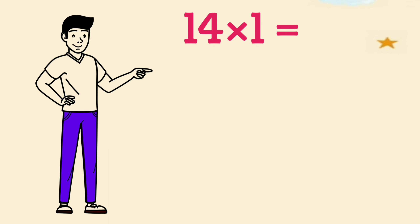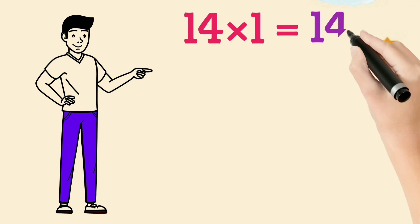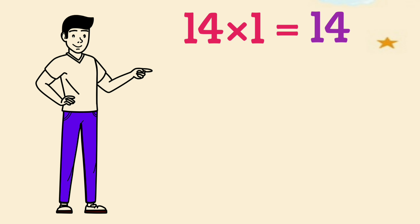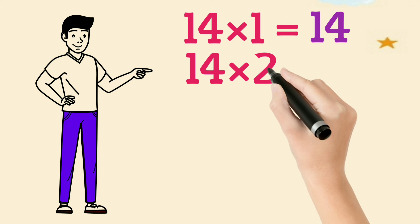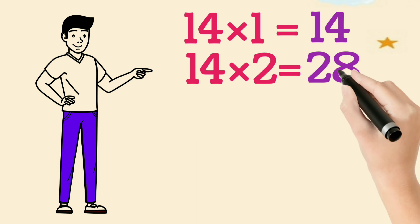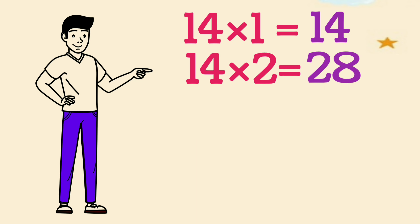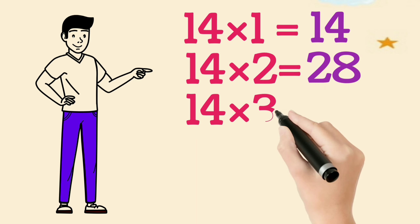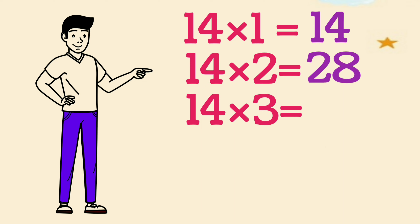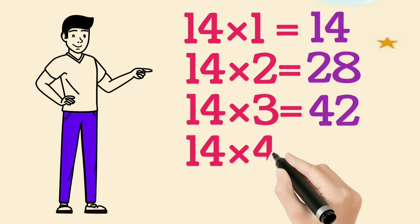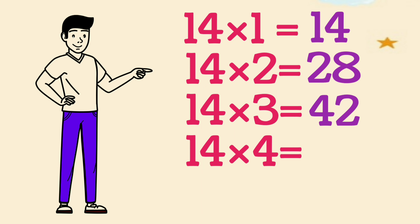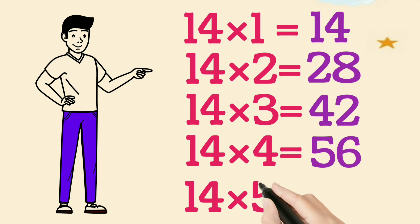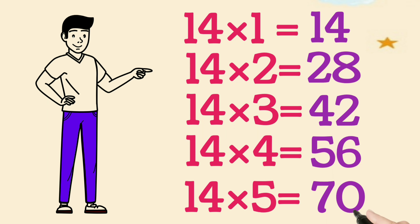14 times 1 is 14. 14 times 2 is 28. 14 times 3 is 42. 14 times 4 is 56. 14 times 5 is 70.